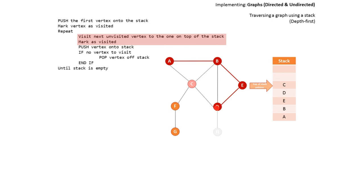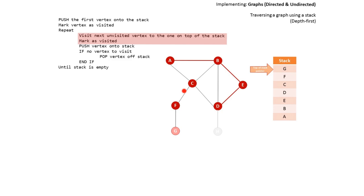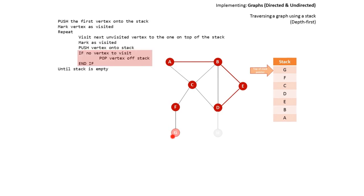Now we're at D, we check for any unvisited vertices, and there is one — C. So we push it onto the stack and mark C as visited. Again, at C, we discover we can go to F, and then from F to G. Our stack is now filled up and we're currently at G. There are no vertices left to visit, so we pop off — G, then F, then C, then D, then E, then B, then A. Remember, we already popped H off earlier.